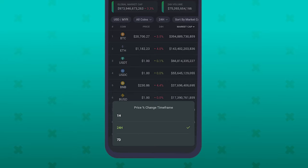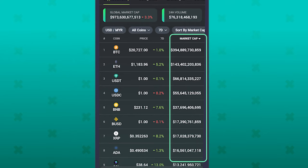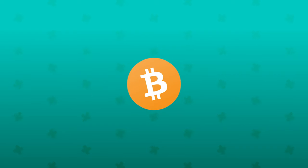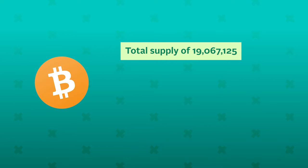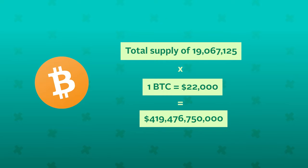Now let's look at the last column labeled as market cap, which is market capitalization in full. This is an important metric for investors as it gives them an idea of the total value of a coin. The market cap is equal to the price of one coin multiplied by the total number of coins in circulation. Bitcoin, for example, at the time of making this video, has a total supply of 19,067,125 and each Bitcoin goes for around $22,000. To get the market cap of Bitcoin, we multiply the two together and that will give us the value displayed here.